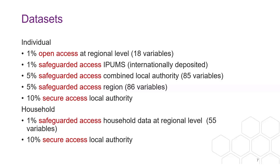Open access means you can get at it without being registered with the UK Data Service, similar to the census aggregate data. Safeguarded access means you need to be registered with the UK Data Service. That's extremely straightforward if you're in a UK higher education institution — you just register, put in your address, and you will be registered. There are no additional considerations or requirements around the safeguarded access to the individual and household datasets.